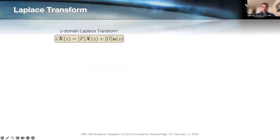After this, we apply the Laplace transform. The z-domain Laplace transform is shown here. Basically, x of k becomes x of z, u of k becomes u of z, but x of k plus one actually becomes z times x of z.